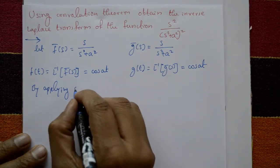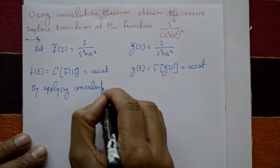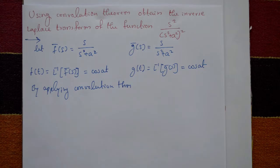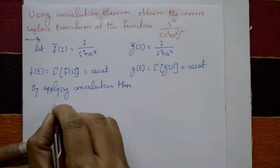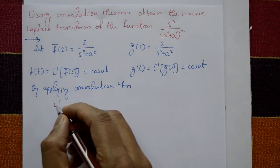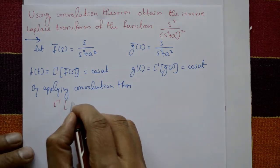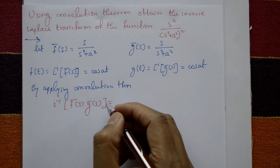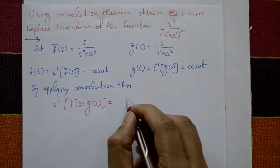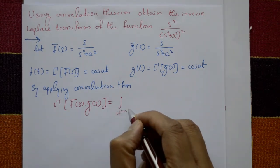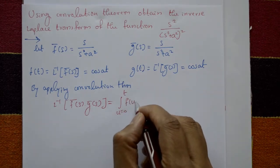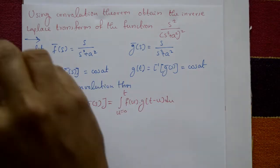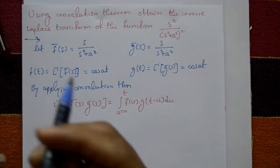By applying the convolution theorem: the inverse of F̄(s)·Ḡ(s) is equal to the integration from u = 0 to t of f(u) into g(t − u) with respect to u. This is the convolution theorem.